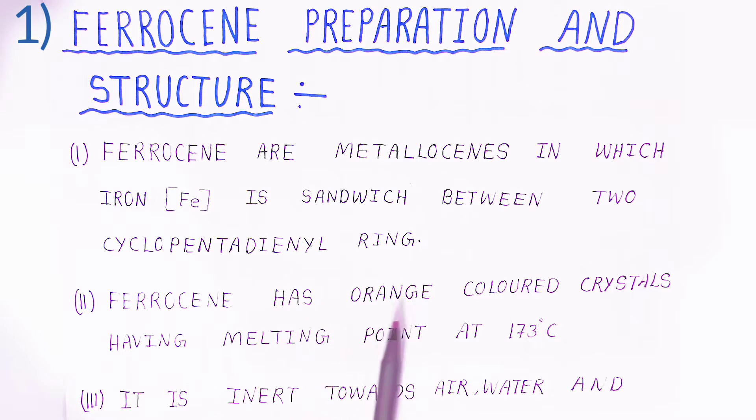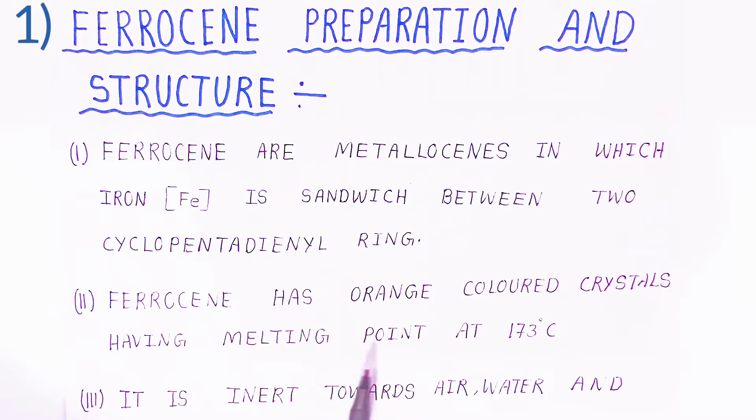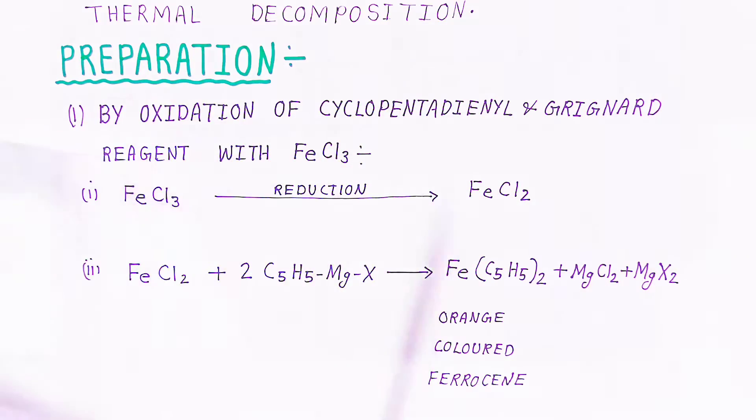Ferrocene has orange colored crystals with melting point at 173 degrees Celsius. It is inert towards air, water, and high temperature thermal decomposition.